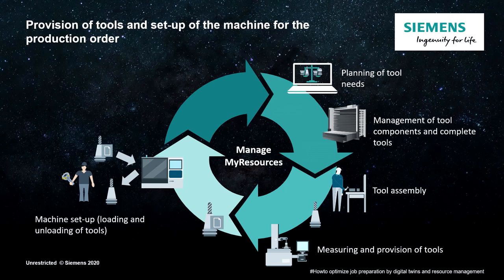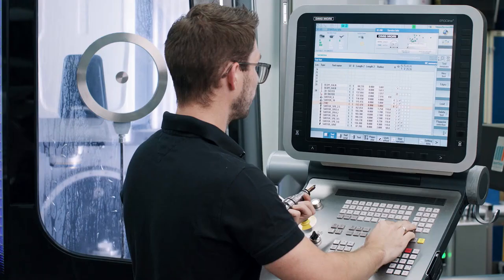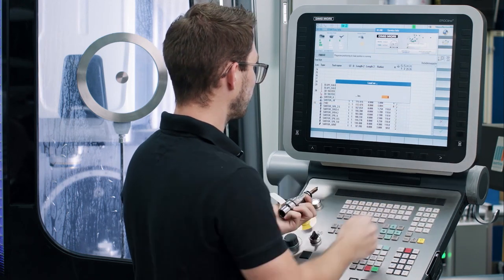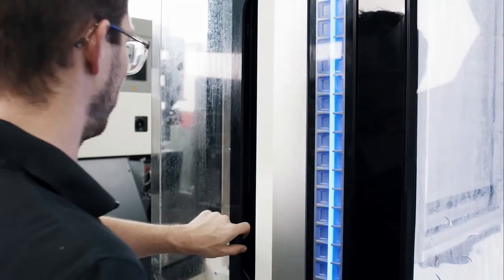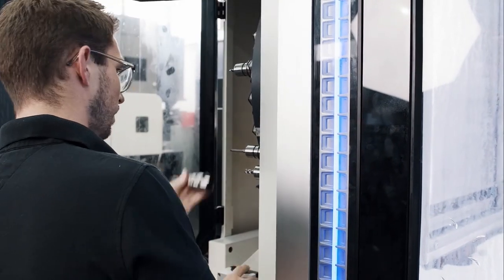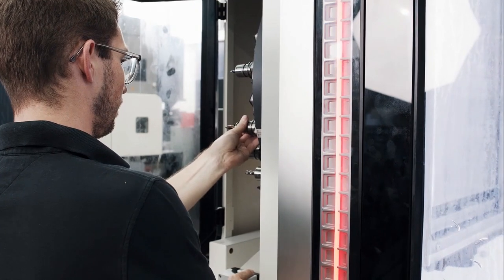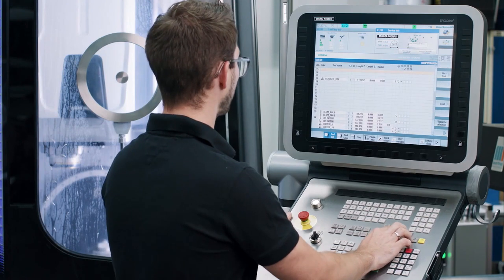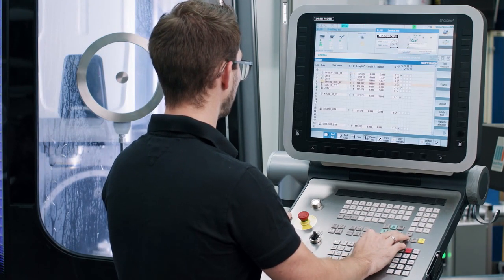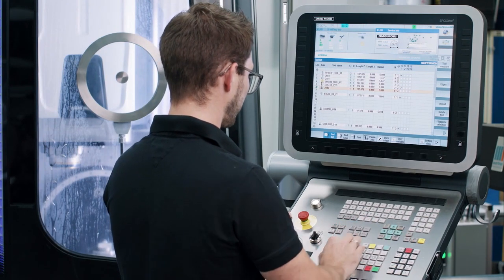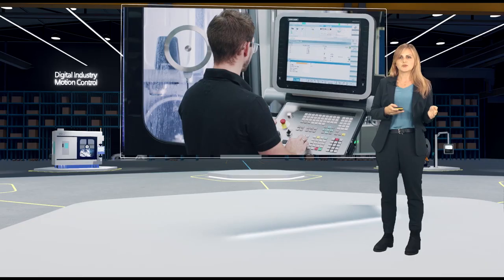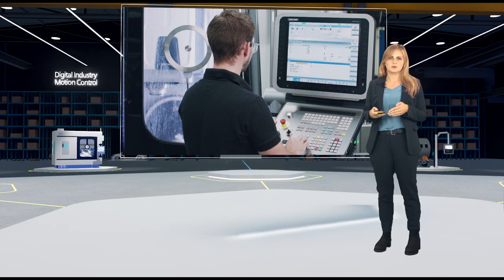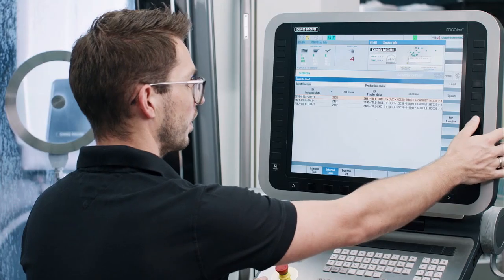After the tools have been brought to the right machine, it is now time to set up the machine. Loading is done separately for each tool. So, after manually entering the correction data at the controller, the operator starts loading, goes to the door, brings the tool into the machine. And the same applies to the unloading process. And these steps for loading and unloading are repeated for each individual tool.